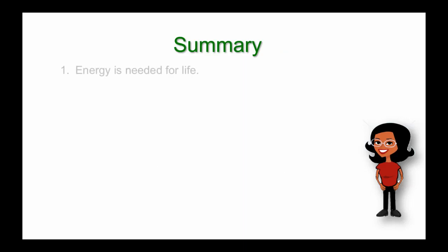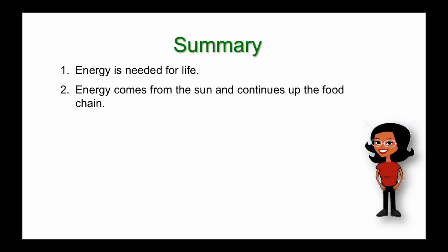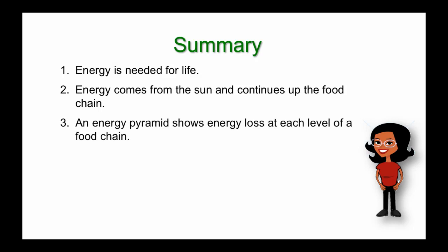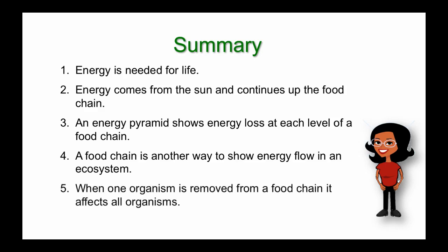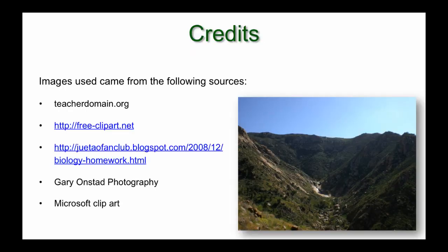So what have we learned? We've learned that energy is needed for all forms of life on the planet, that energy comes from the sun and continues up the food chain — the food chain could also be called the energy chain. An energy pyramid shows energy loss at each level; we lose about 90% of energy available as we go up. A food chain shows energy flow in an ecosystem, and when one organism is removed, it affects all the other organisms. These images came from various sites, and Gary Onstead was responsible for all the photography in this presentation.